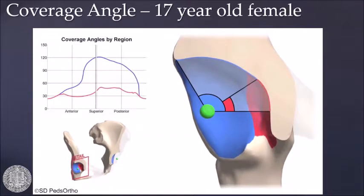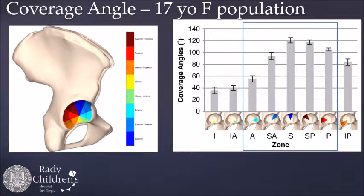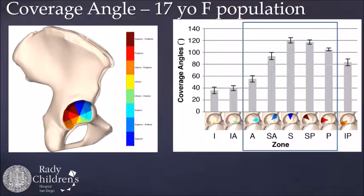This is the coverage for one particular patient. If we take that continuous data and break it into octants on the acetabulum — the blue again represents the weight-bearing surface, the red is the fossa — and then take a cohort of 17-year-old females, you can get standard deviation errors in the eight octants. I'll focus on the five octants in the box: superior, superior anterior, and superior posterior sectors, as well as the anterior and posterior wall. The 120-degree average measure on the superior quadrant correlates to the 30-degree Weiberg lateral center edge angle, so 120 minus 90.